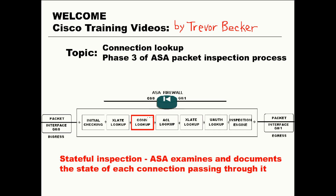Stateful inspection means that the ASA firewall examines and keeps track of the state of each connection successfully or unsuccessfully attempting to go through it. If a connection from an external host is allowed through that firewall and the connection is not dropped by an access list, then that connection will form.